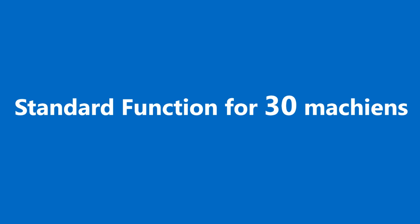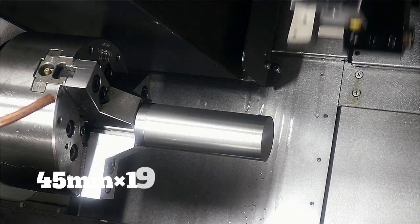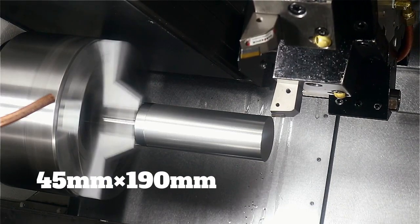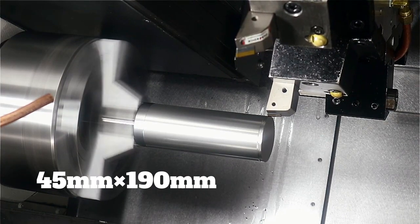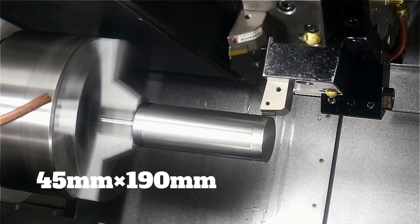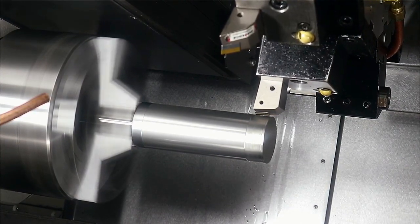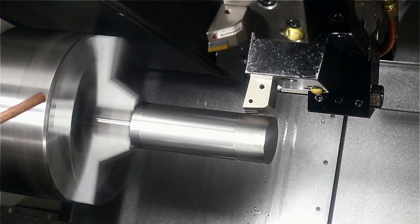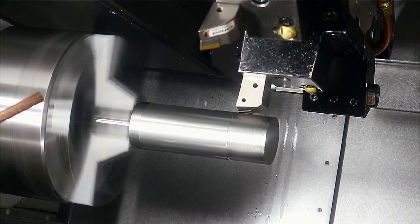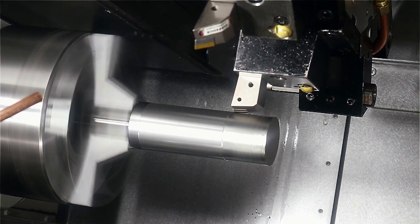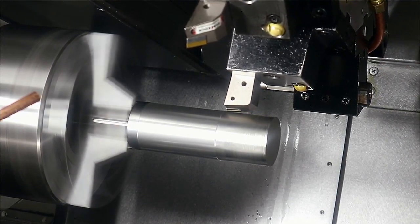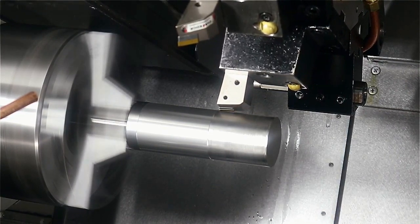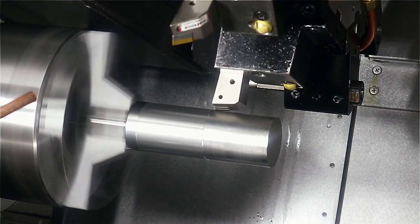So now, let's take a look at the machining. First, let's try machining without chatter cancellation. Today, we will be machining a workpiece with a diameter of 45 mm and a length of 190 mm with the left side spindle. From the sound of it, you can hear that it is vibrating. The length of the path from the chuck is 140 mm.